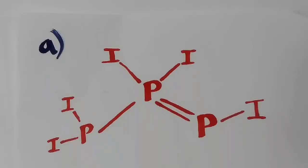In option A, this phosphorus is attached to two iodine and one phosphorus. This phosphorus is attached to two iodine and two phosphorus. Therefore, it is different from this phosphorus.